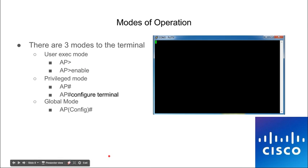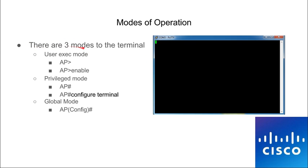Once it opens you're going to get a black screen — that's how you know you did it correctly. There are three modes of the terminal or command line: user exec mode, privilege mode, and global mode. There are very few things you can do in user exec mode. To get into privilege mode, type 'enable' — it's also known as enable mode. To get to the next mode, type 'configure terminal' or 'configure t'.